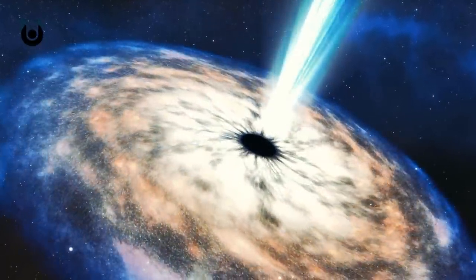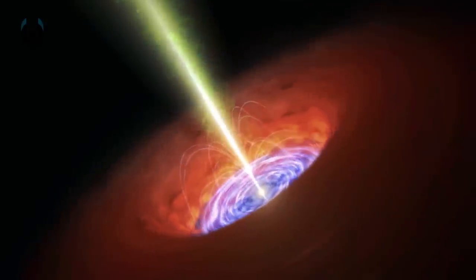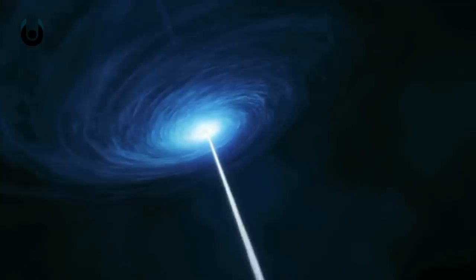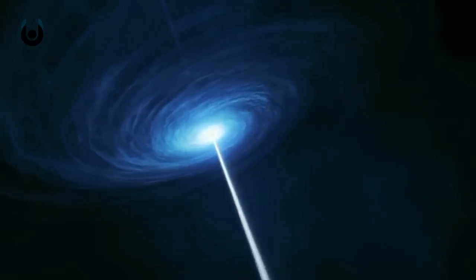Instead, the light we see comes from magnetic fields near a spinning black hole that propel electrons outward in a jet along the rotation axis. The electrons produce bright radio waves.